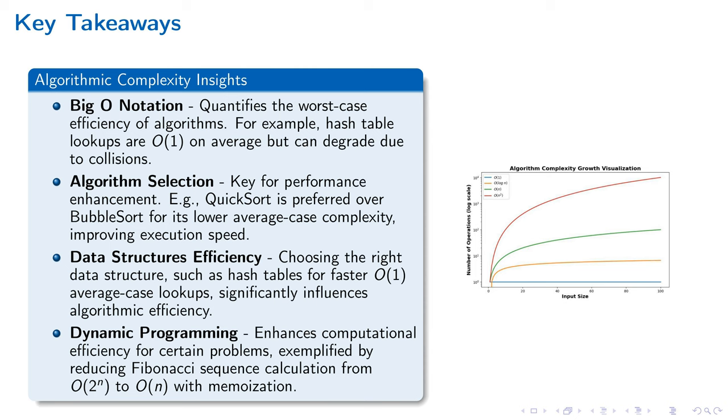Big O notation is critical for algorithm analysis because it provides a benchmark for algorithm performance under the most demanding scenarios. By understanding how algorithms scale with increasing data sizes, developers can make informed decisions that ensure applications remain robust and responsive, even under extreme conditions.